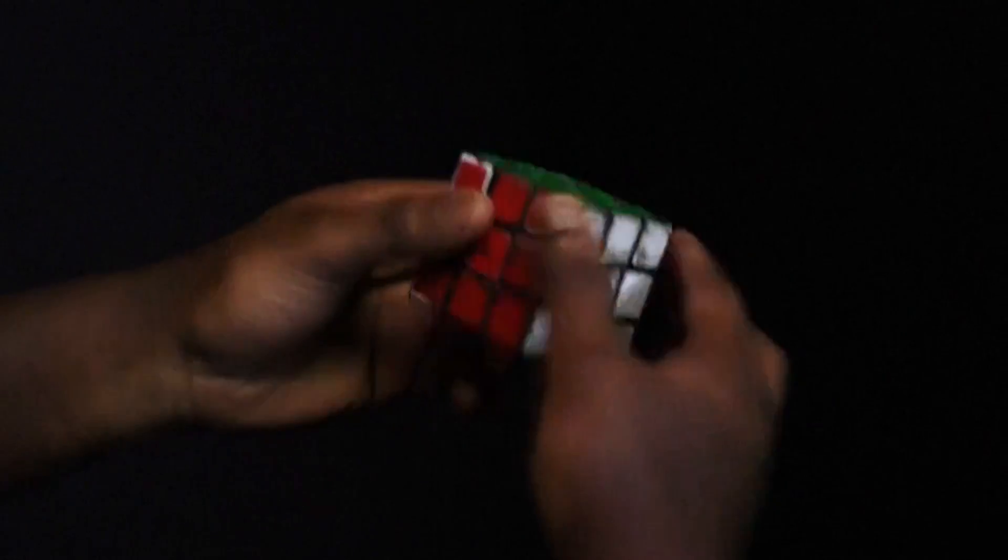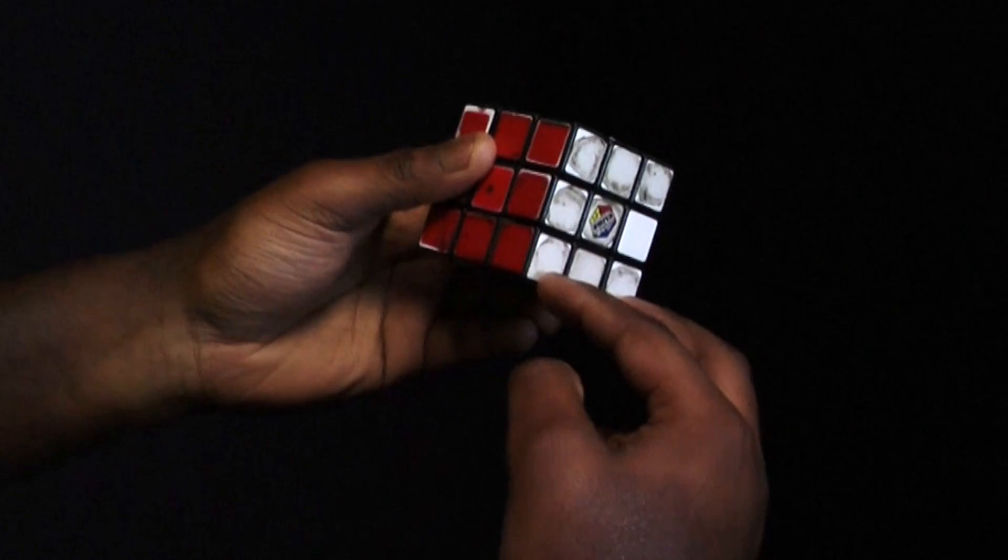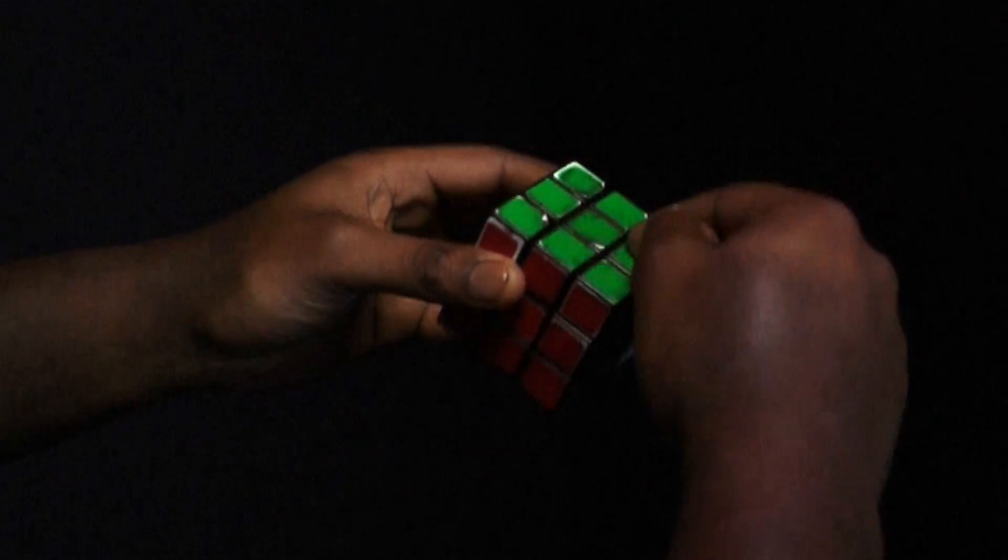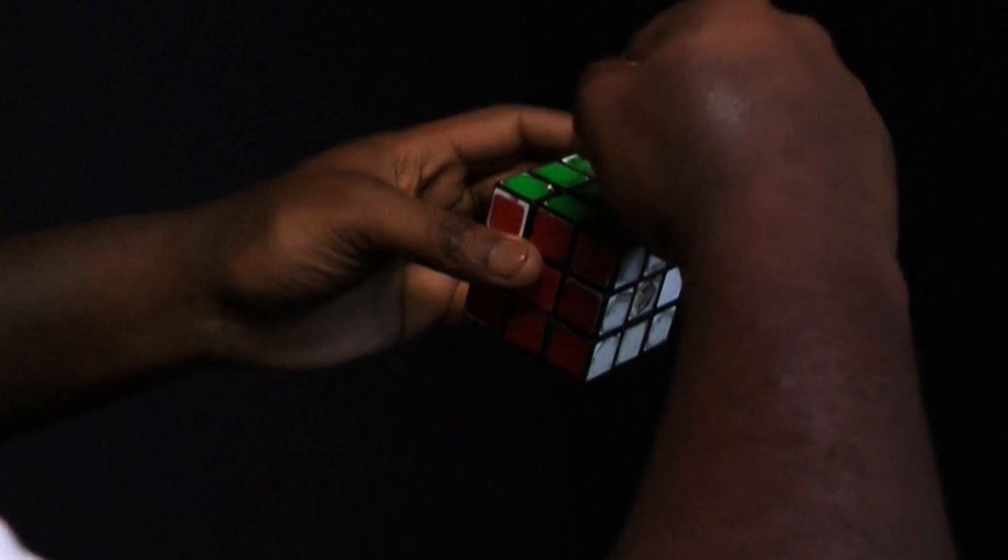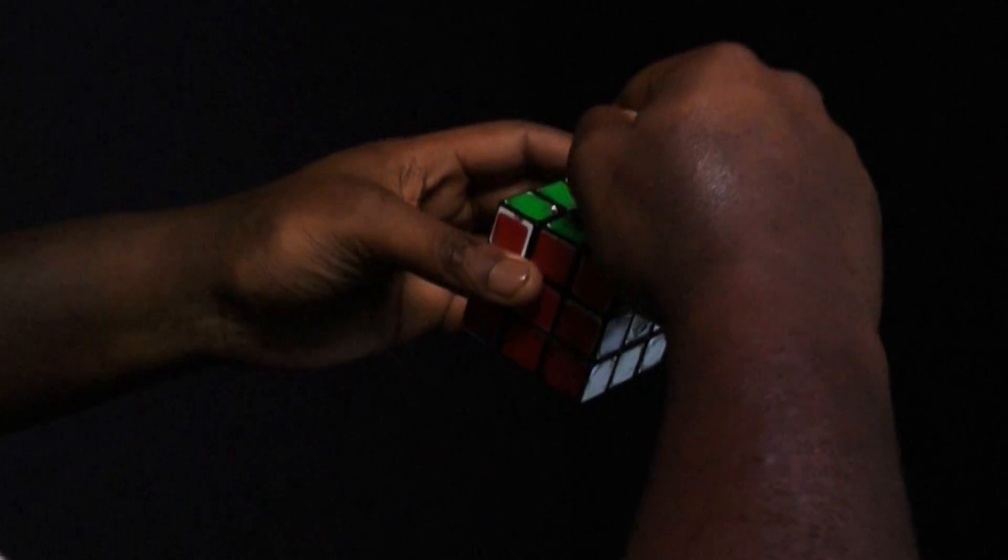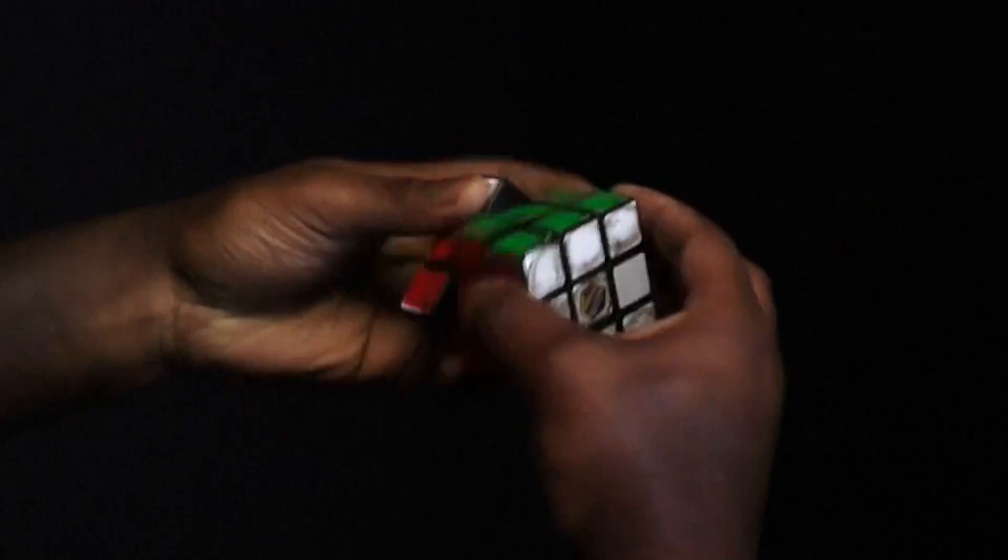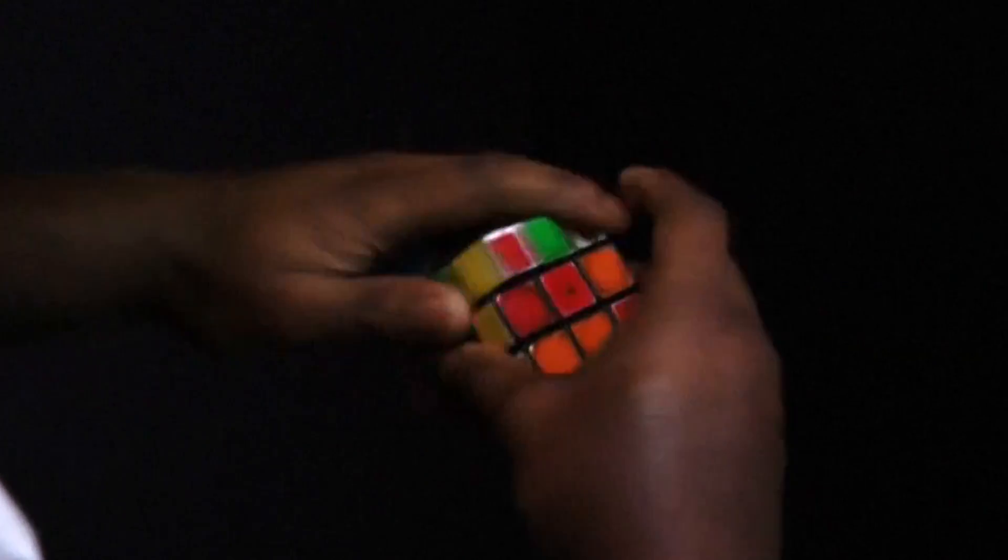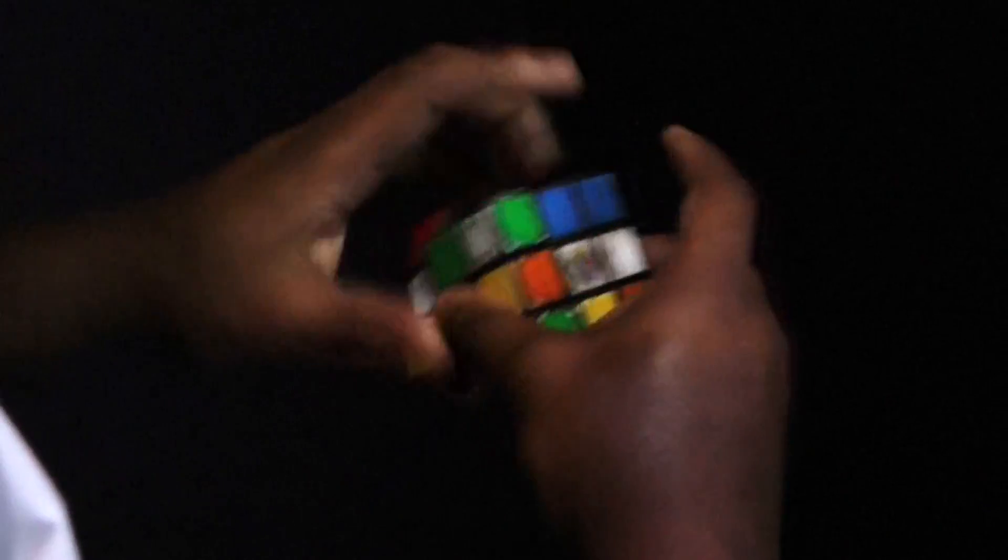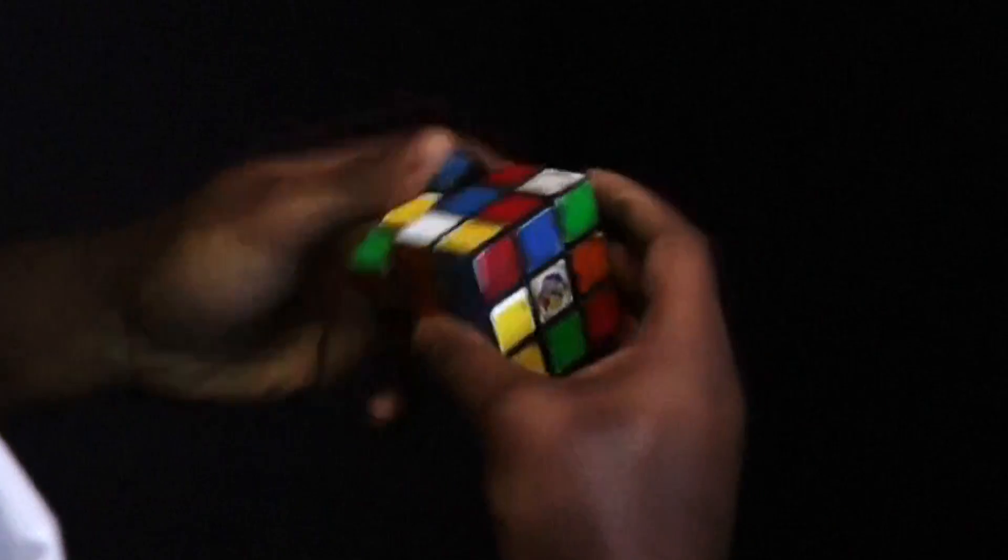You have corners, and they can only swap with each other. Edges, and they can only swap with each other. So you can't put a corner on an edge piece, or an edge piece where a corner is. So let's start, just to scramble the cube, and teach you how to solve it.